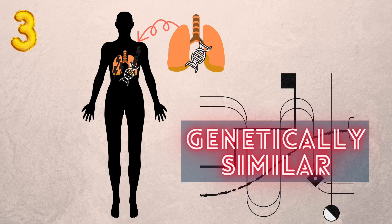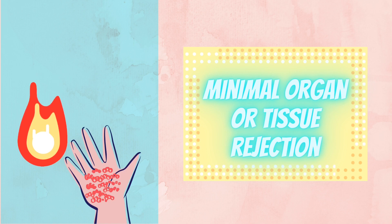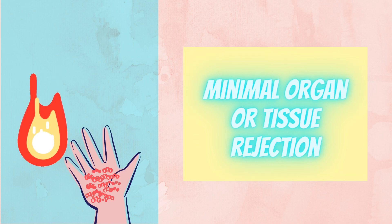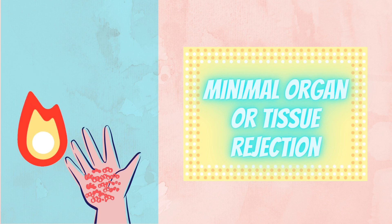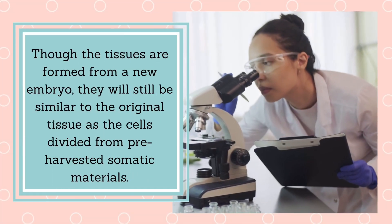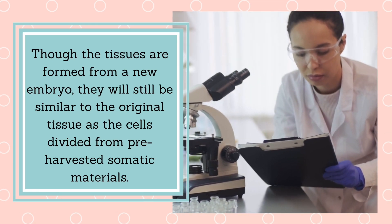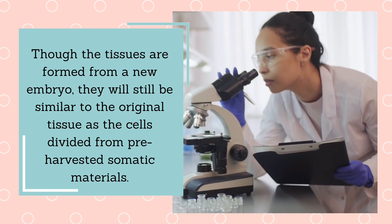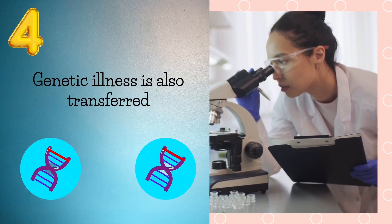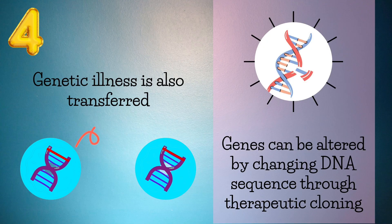Third, tissue rejection will not be a worry anymore. Therapeutic cloning would provide organs or tissue which are genetically similar to that of the patient, so organ or tissue rejection would be minimal. For victims of burnt skin or other non-organ-associated afflictions, these can be replaced by therapeutic cloning. Though the tissues are formed from a new embryo, they will still be similar to the original tissue.